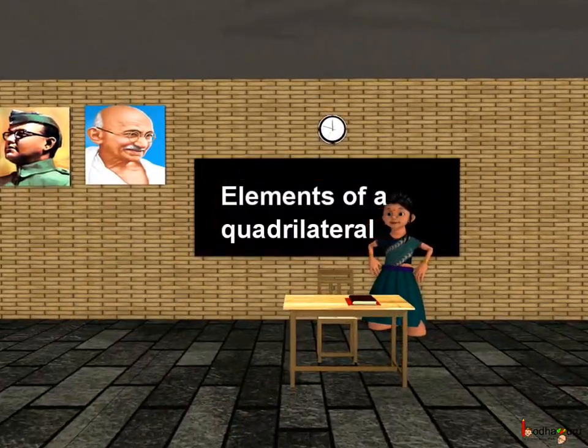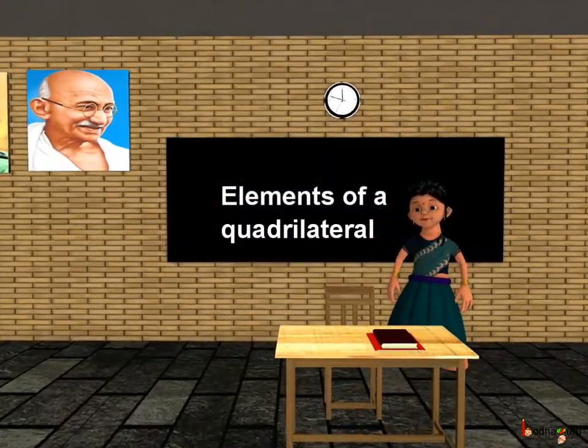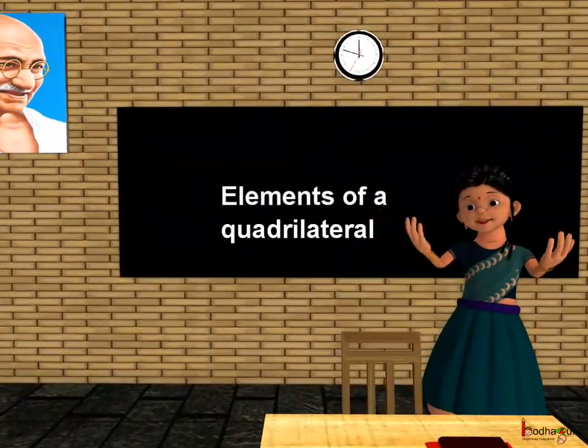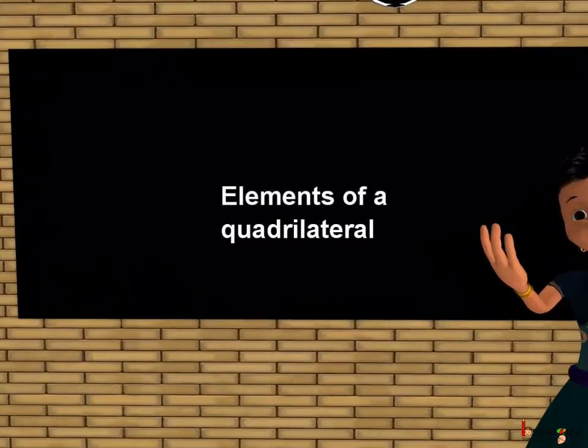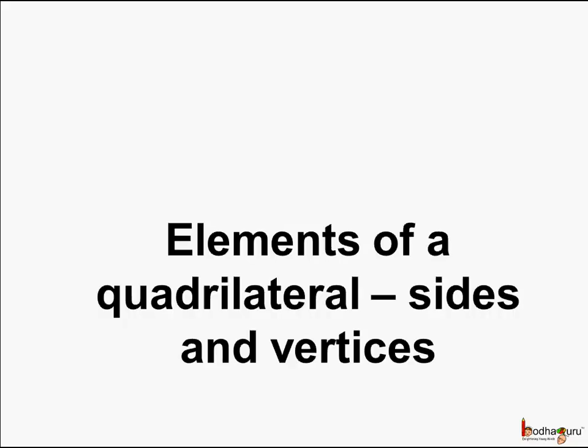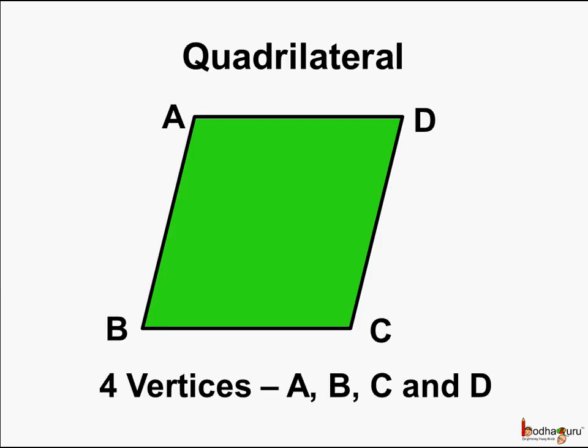Good morning children. Now we know what is a quadrilateral. So let us learn about the elements of a quadrilateral, specifically the sides and the vertices.